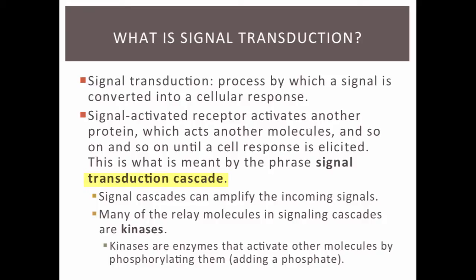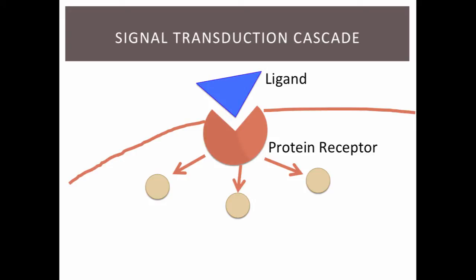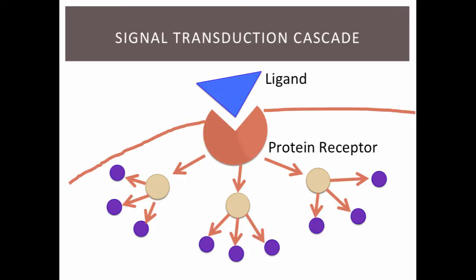Signal transduction cascades are important because they can amplify an incoming signal. For example, one signal molecule might bind and activate one protein receptor. This protein receptor might activate three other molecules, which then might in turn activate three other molecules, which then might go and activate other things. So you started with this one signaling molecule, but you ended up with this huge cell response.